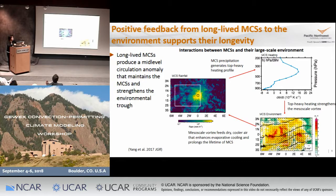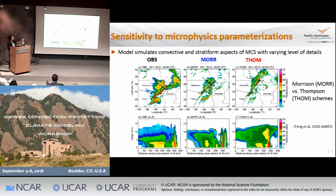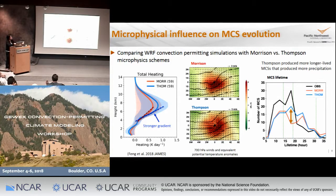To test whether this is indeed the case, we performed two other simulations varying the microphysical processes, looking at two microphysics schemes: the Morrison scheme and the Thompson scheme. Without going into the details of the microphysics, these two schemes do produce MCSs that are somewhat different in terms of the area of the stratiform cloud and the amount of stratiform precipitation. We wanted to see whether these differences in microphysics can affect the macro-physical properties of the MCSs, such as their lifetime or propagation speed.